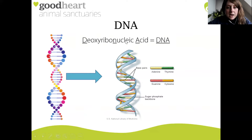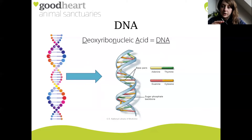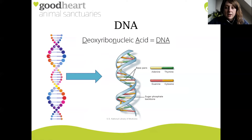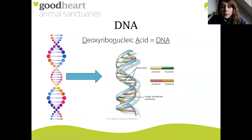On the outer edges of this double helix you can see a sugar-phosphate backbone, which provides the structural integrity of the DNA - it keeps its shape and holds everything together. The really important part of DNA is found in the centre, and they're known as the base pairs: we have adenine, thymine, guanine and cytosine.